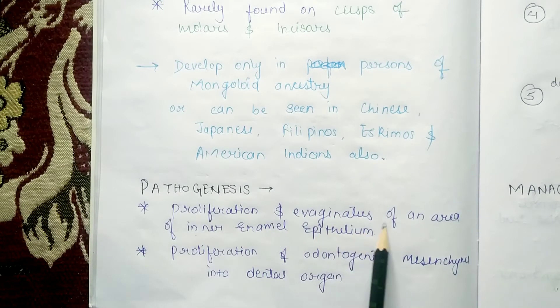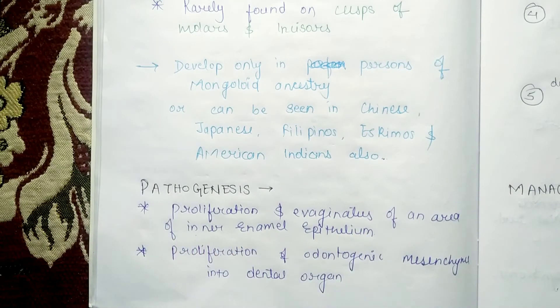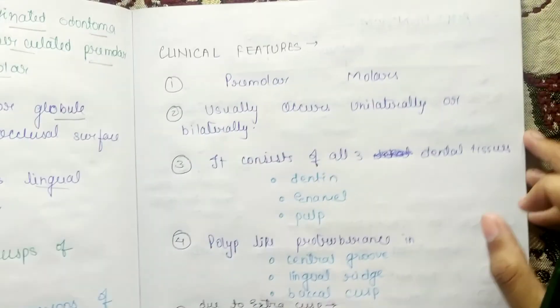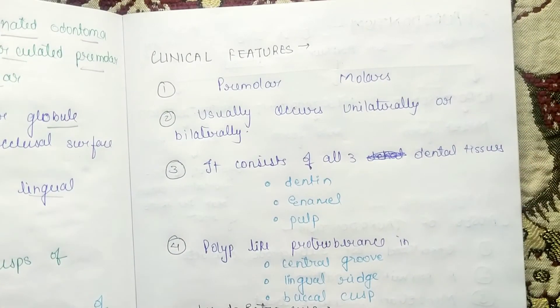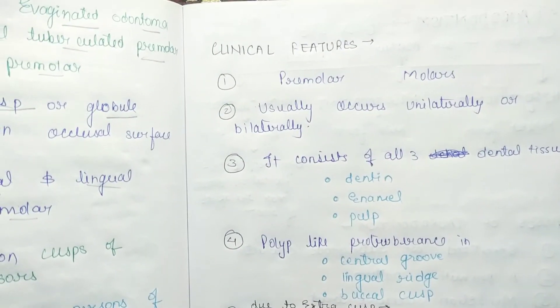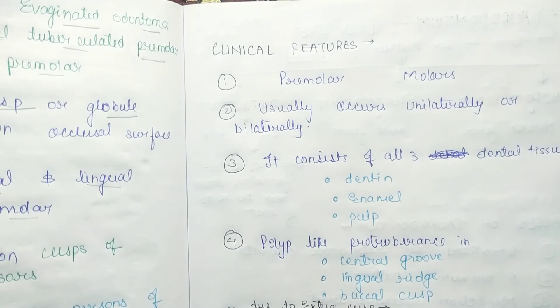Regarding its pathogenesis, it involves proliferation and evagination of an area of inner enamel epithelium or odontogenic mesenchyme that has developed into a dental organ.